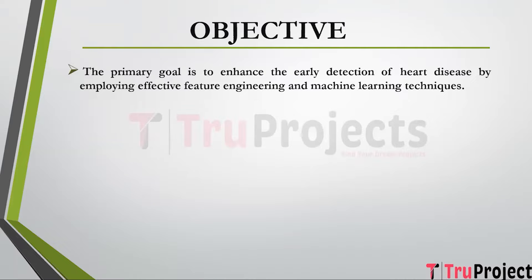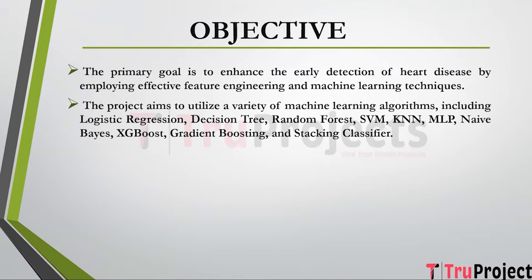The primary objective is to enhance the early detection of heart disease by employing effective feature engineering and machine learning techniques, aiming to reduce the burden of heart disease on patients and healthcare systems. The project utilizes a diverse range of machine learning algorithms including logistic regression, decision tree, random forest, SVM, KNN, MLP, naive Bayes, XGBoost, gradient boosting, and stacking classifier to provide a comprehensive and accurate approach to heart disease prediction.